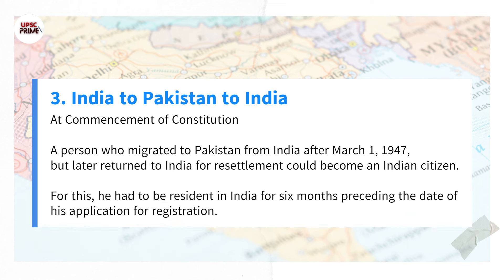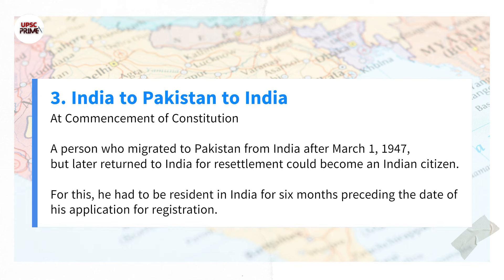Category 3: A person who migrated to Pakistan from India after March 1, 1947, but later returned to India for resettlement could become an Indian citizen. For this, he had to be resident in India for six months preceding the date of his application for registration.